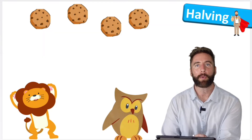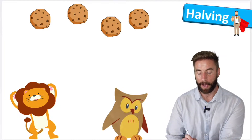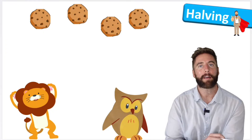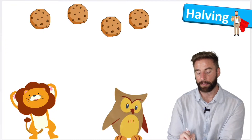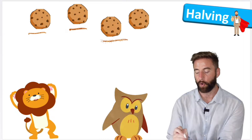I want to introduce you to two of my friends. We have Mr. Lion and we have Mrs. Owl. But we have a little bit of a problem. We have these four cookies: one, two, three, four.